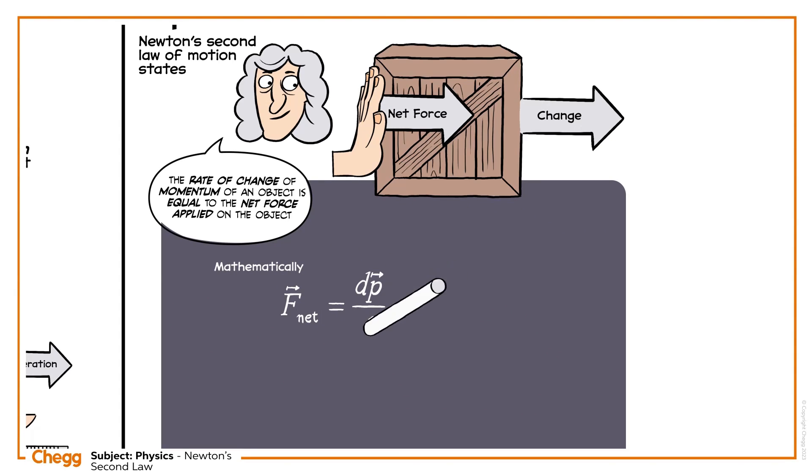Mathematically, F is the net force acting on an object. P is the momentum and dp/dt represents the change in the momentum of the object in time dt.